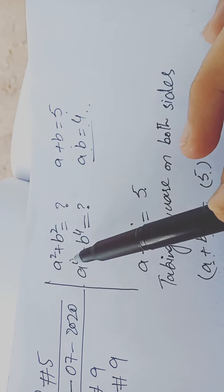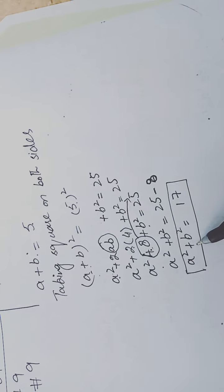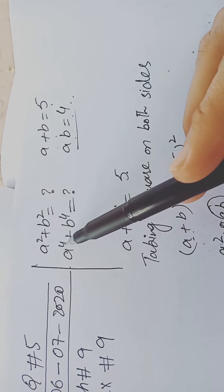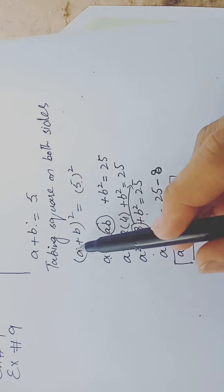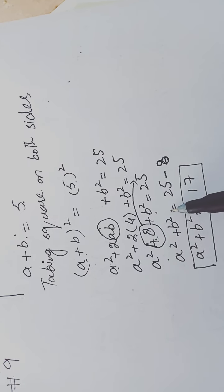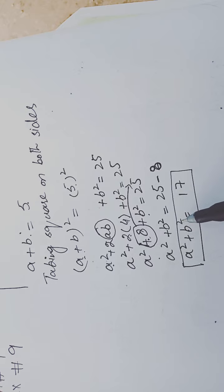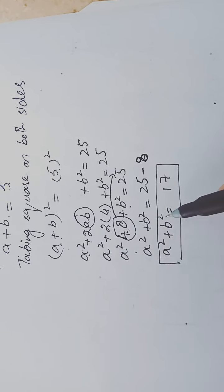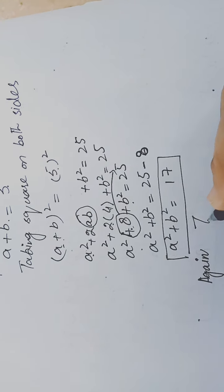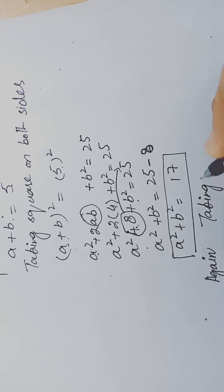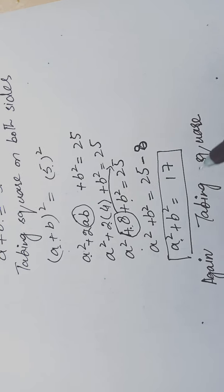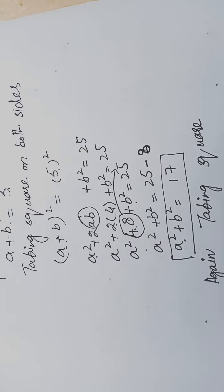We found a² + b² = 17. Now we have to find a⁴ + b⁴. Just as we squared (a + b) to get a² + b², if we square (a² + b²) it will give us a⁴ + b⁴. So we take the square of a² + b² again.